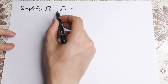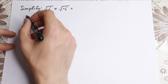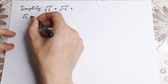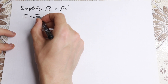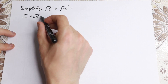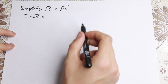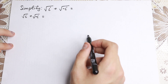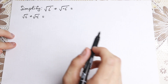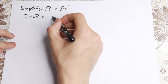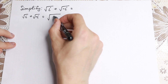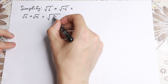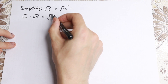We have square root of i plus square root of minus i. What are we going to do next? If we write this i as a square root — take a look closely — we write it as the square root of 2i over 2.